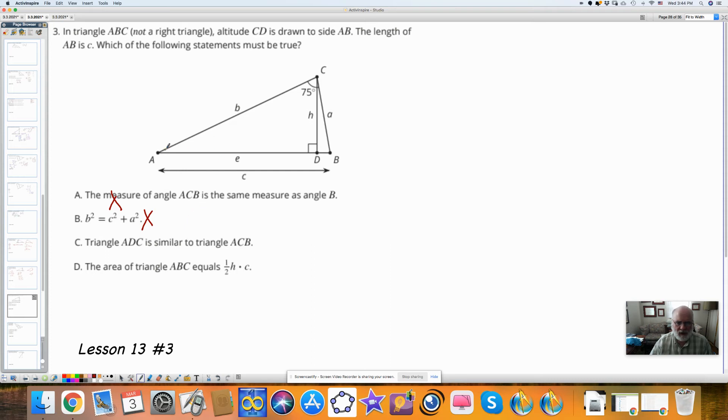Triangle ADC, ADC, is similar to triangle ACB. And I'm going to say this has one angle here that is the same, but I don't know that this is a right angle. So I don't have two angles that are the same. I can't say that. The area of triangle ABC is equal to one half of height times C. Well, that's true. It's one half of the base, which is this distance, and the height is going to be this distance. So that's true.